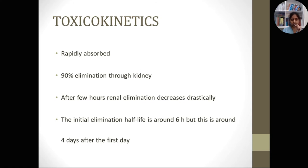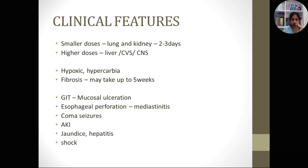Regarding toxicokinetics: immediately after ingestion, the poison is rapidly absorbed into the circulation. After absorption, 90% is eliminated through the kidney. However, after the first 4 to 6 hours, renal elimination decreases drastically and most of the poison accumulates in all organs, especially the lung and kidney, followed by liver and muscles. The initial elimination half-life is very fast at about 6 hours, but after 6 hours the elimination half-life is around 4 days, as the poison has been deposited in other tissue compartments.